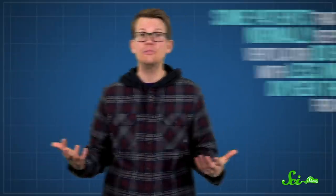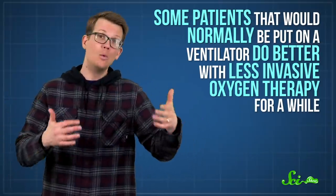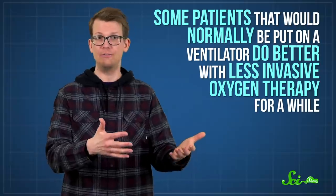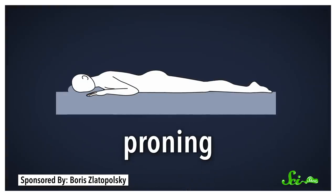And in the last year, we've learned that when it comes to COVID-19, ventilators aren't always needed as early as we thought, even for patients with low oxygen levels. We're still learning exactly why this illness may be different, but it seems that some patients that would normally be put on a ventilator do better with less invasive oxygen therapy for a while. In fact, one of the more effective things has been just turning patients onto their stomachs instead of their backs, known as proning.